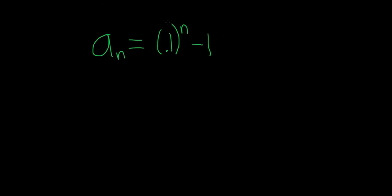So the idea here in order to do this problem is to recognize that this piece here is going to go to 0. And the way you know that is because this is a number, 0.1, between 0 and 1.